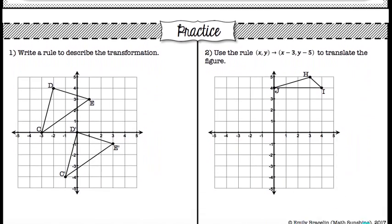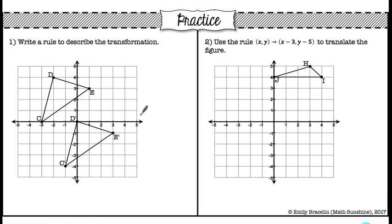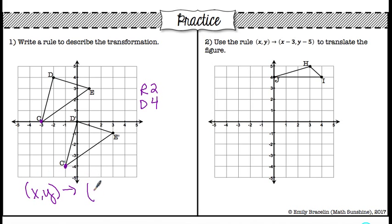Let's look at some practice examples — a good opportunity to pause the video and try these on your own. Practice question 1 says: write a rule to describe the transformation. The figure has moved right and down. Comparing C to C prime: right 2, down 4. To go right is x plus 2, to go down is y minus 4. So the rule is x plus 2, y minus 4.